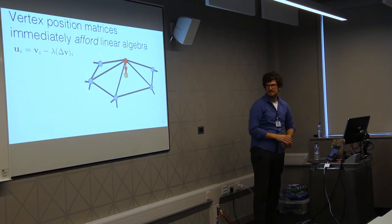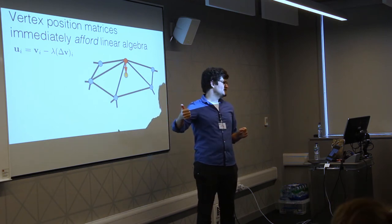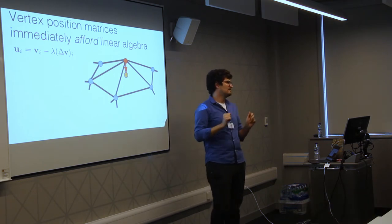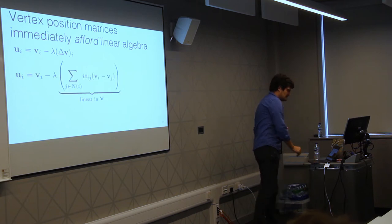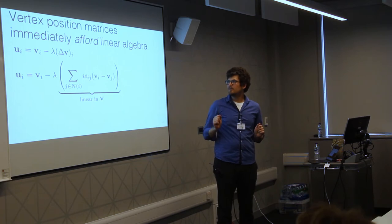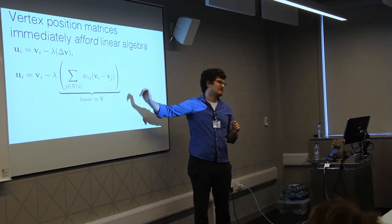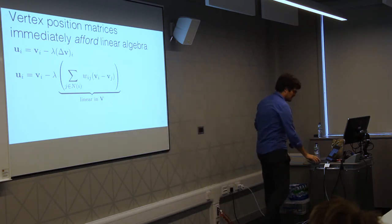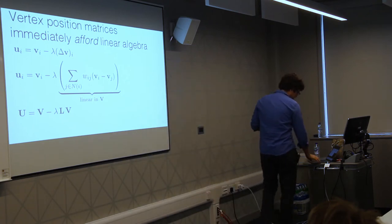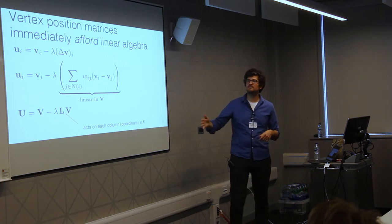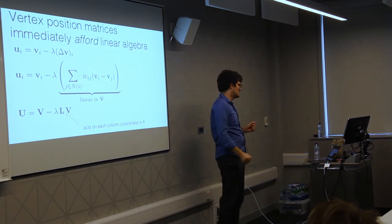In a discrete sense, we want to update every vertex i with a new position equal to the old position minus the Laplacian at vertex i. The Laplacian is pointing towards the average of its neighbors — it's a weighted combination of the difference between me and my neighbors. This is a linear operation in the vertex positions, so we can represent it as a sparse matrix. It also acts independently on each column — independently on X, Y, and Z.